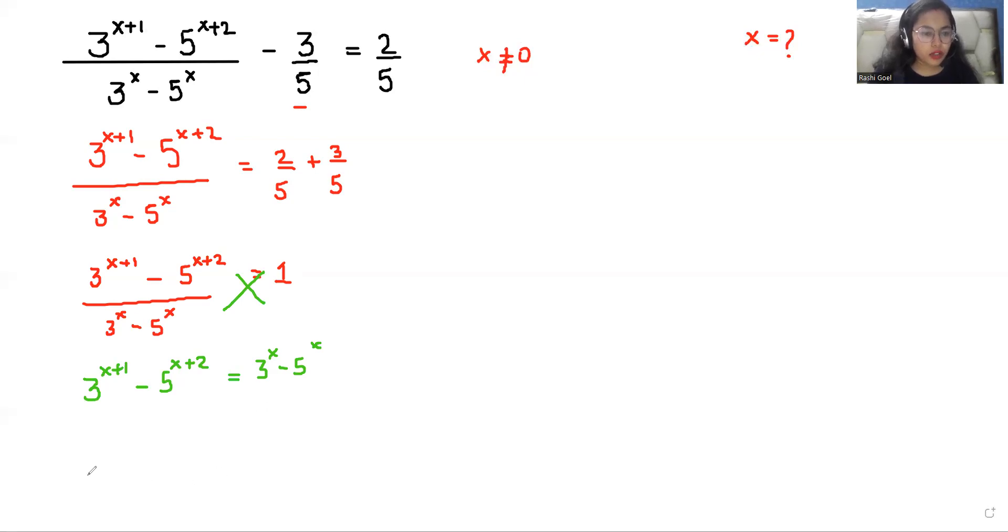We can take the 3 power x plus 1. 3 power x plus 1 minus 3 power x is equals to 5 power x plus 2 minus 5 power x.